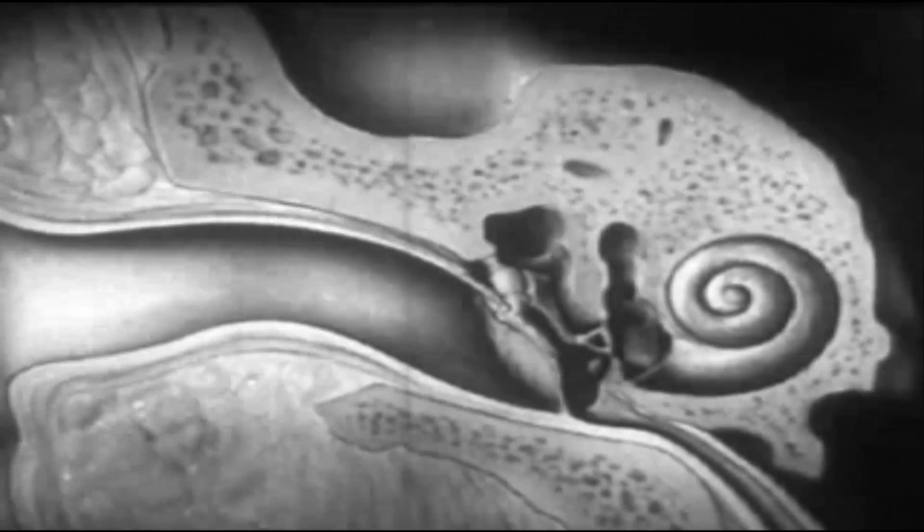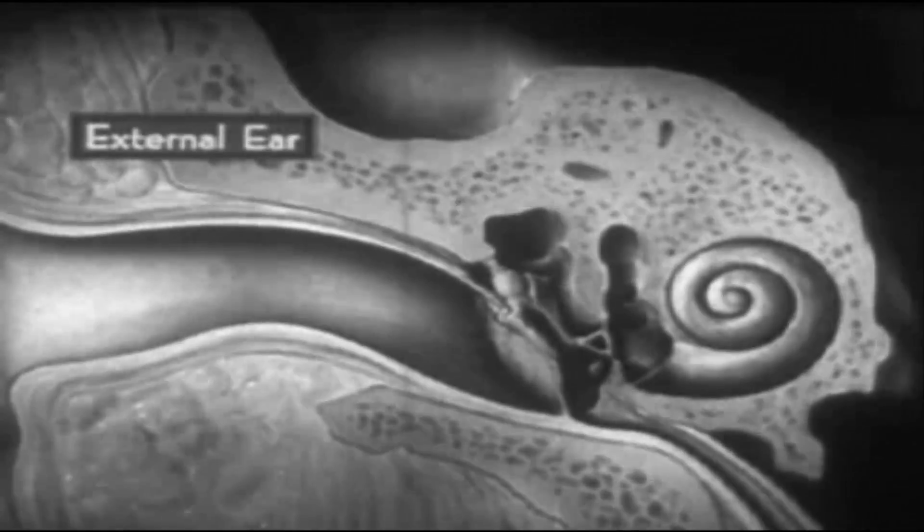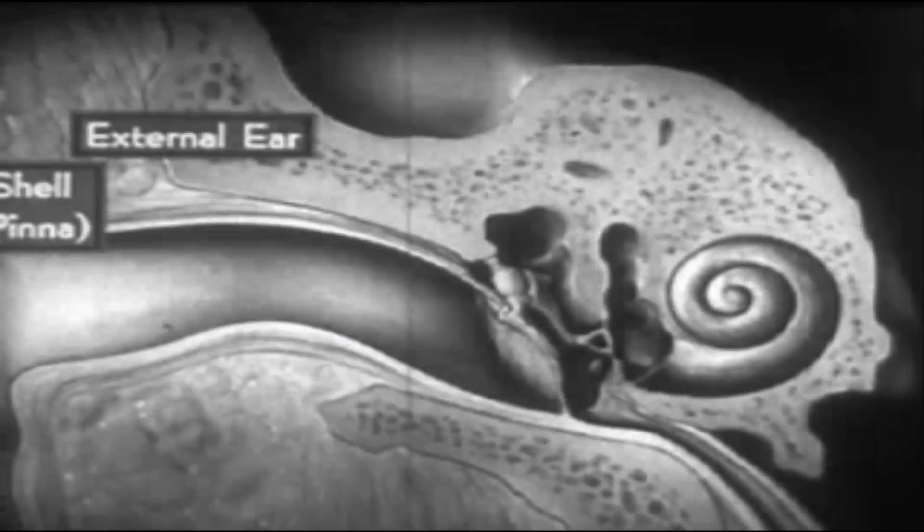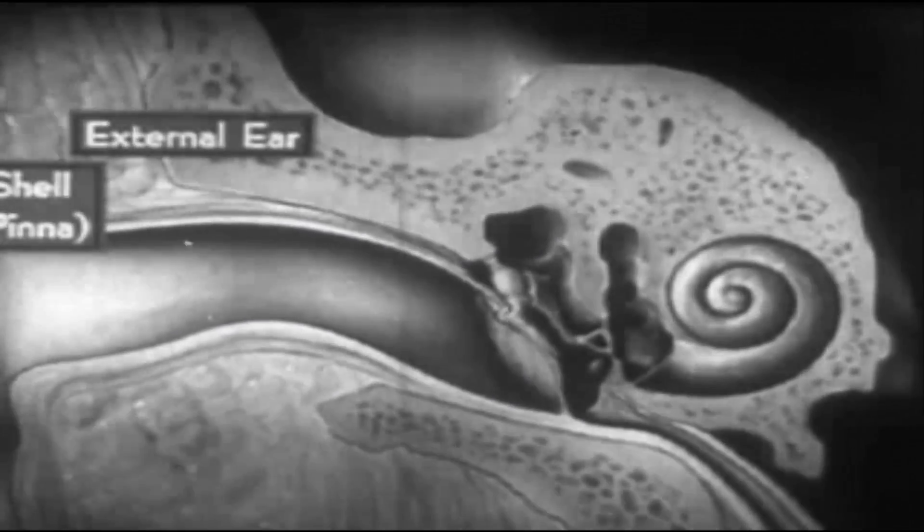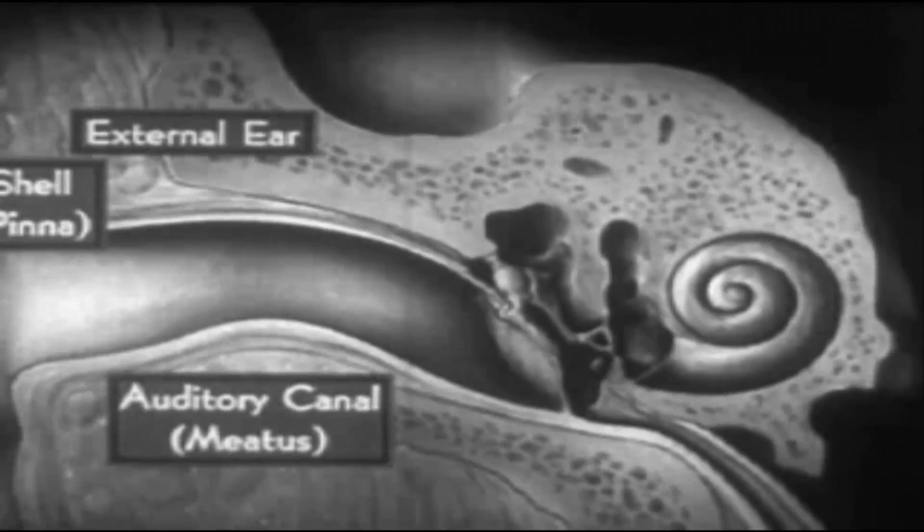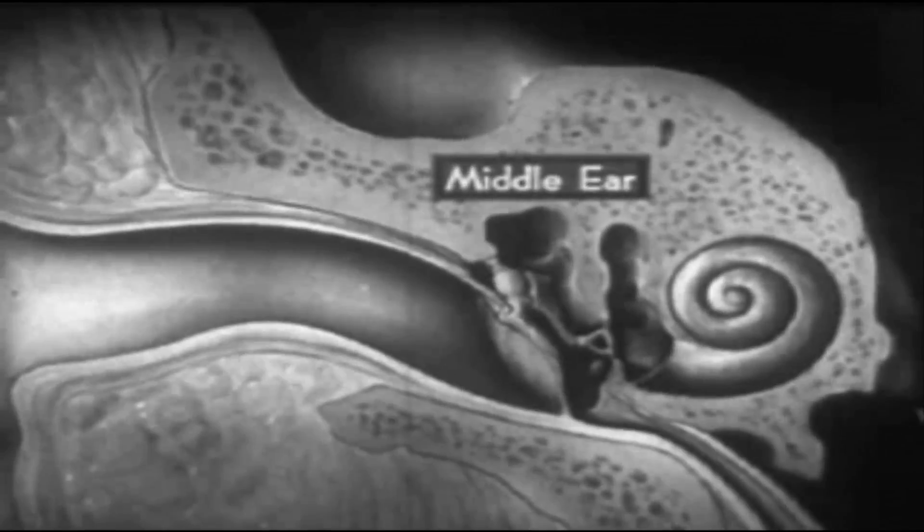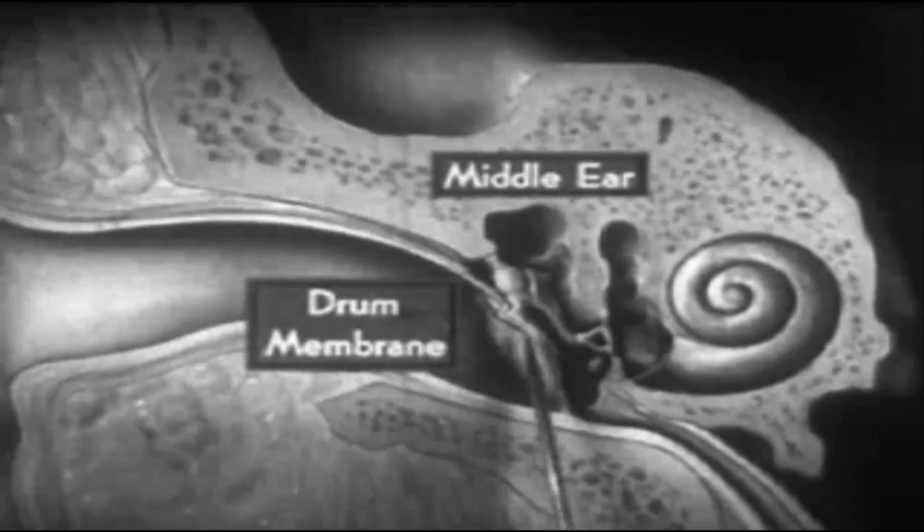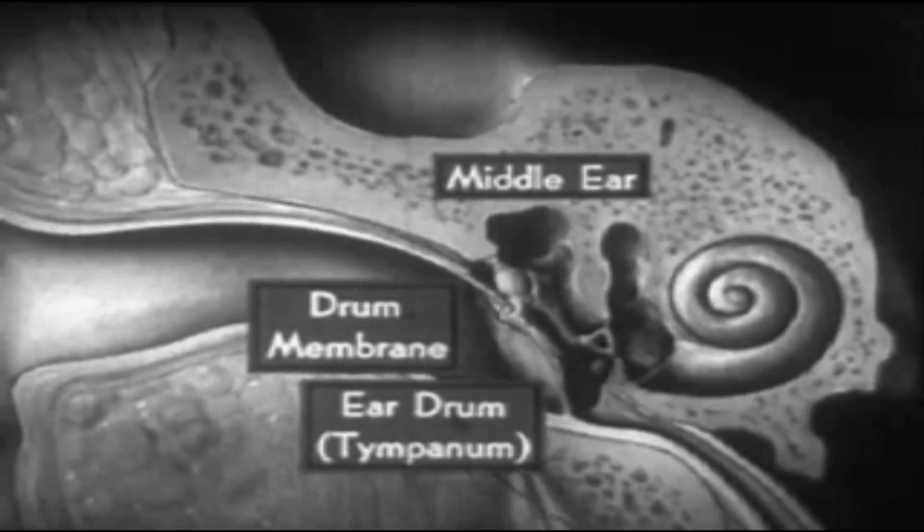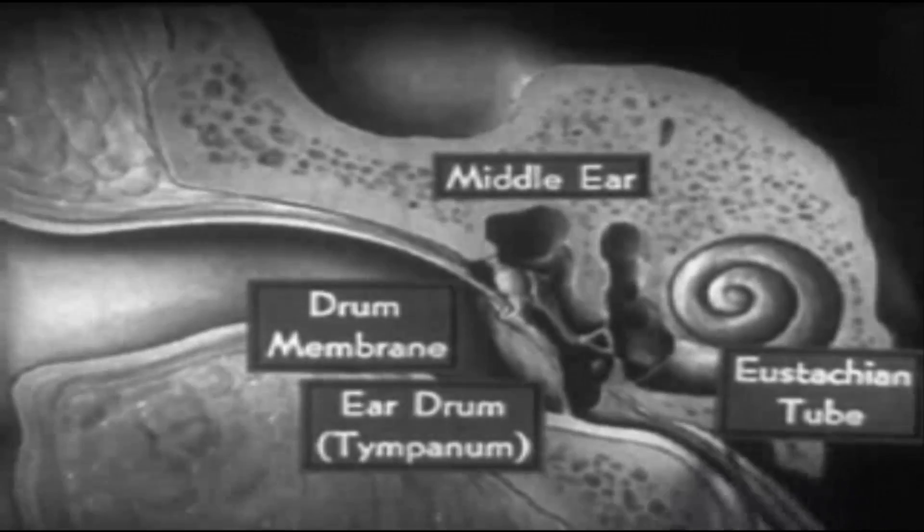The ear is divided into three parts. First, the external or outer ear, consisting of the shell or pinna and the auditory canal or meatus. These and many of the parts that are to follow have been given their names because they resemble familiar objects. Second, the middle ear or ear drum, also called the tympanum, consisting of the drum membrane, already compared to a drum head, and the drum cavity. This is shut away from the outer ear by the drum membrane, but communicates with the throat by means of the Eustachian tube.